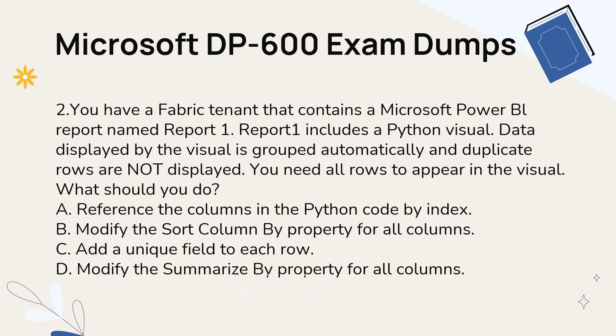Question 2. You have a Fabric tenant that contains a Microsoft Power BI report named Report 1. Report 1 includes a Python visual. Data displayed by the visual is grouped automatically and duplicate rows are not displayed. You need all rows to appear in the visual. What should you do? A. Reference the columns in the Python code by index. B. Modify the sort column by property for all columns. C. Add a unique field to each row. D. Modify the summarize by property for all columns.